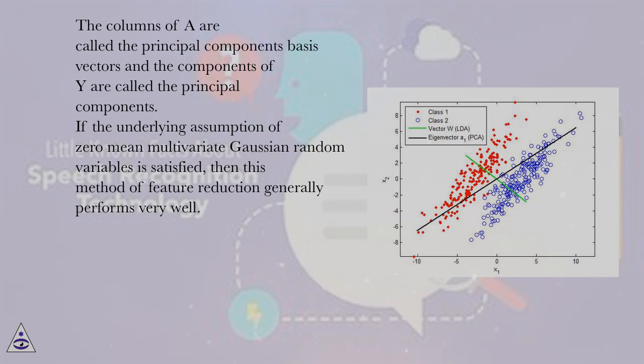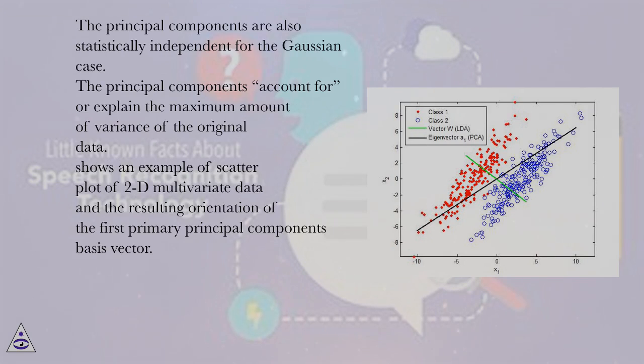If the underlying assumption of zero mean multivariate Gaussian random variables is satisfied, then this method of feature reduction generally performs very well. The principal components are also statistically independent for the Gaussian case. The principal components account for or explain the maximum amount of variance of the original data.